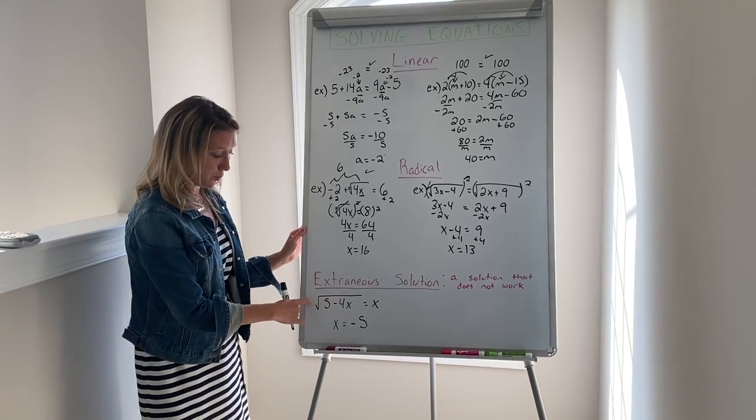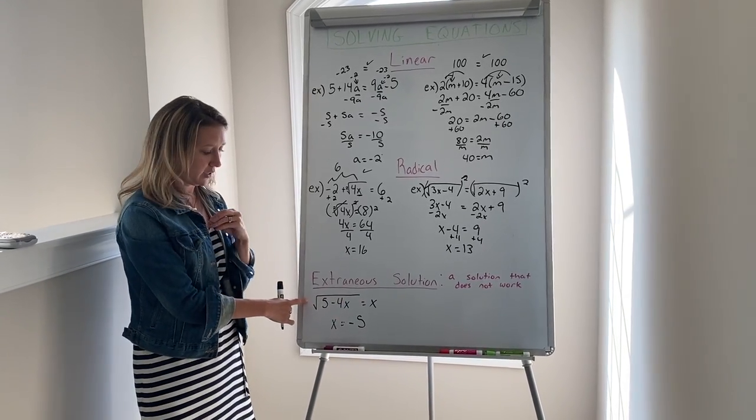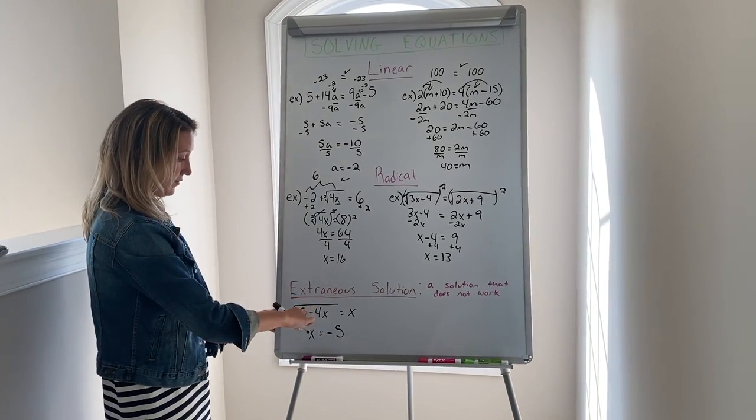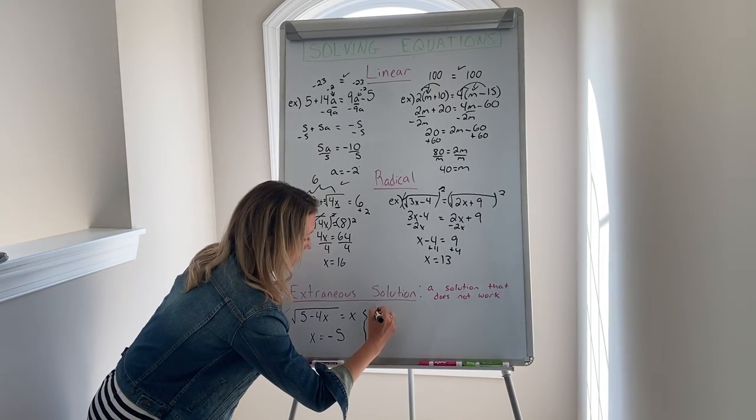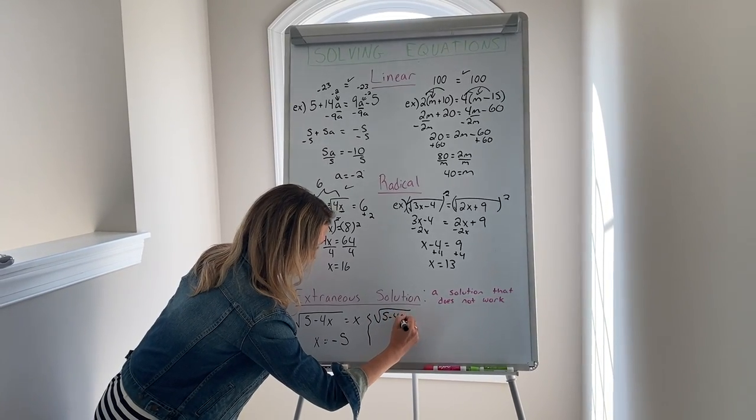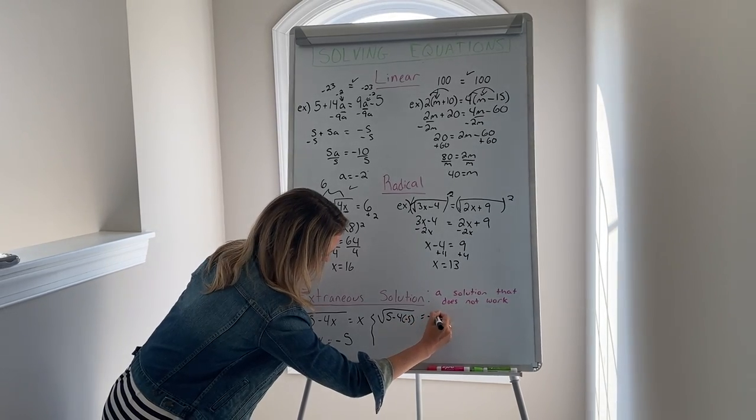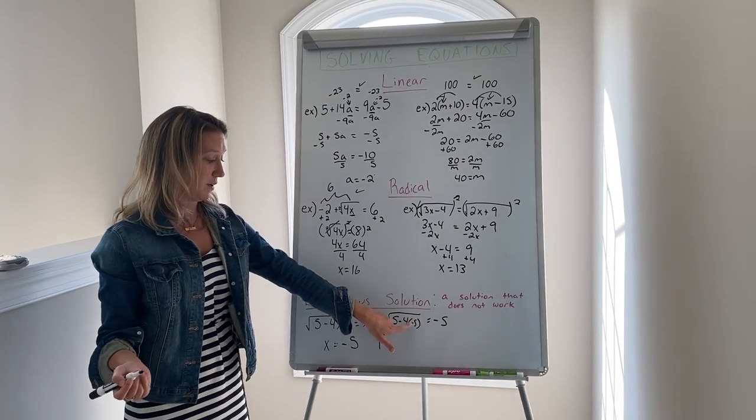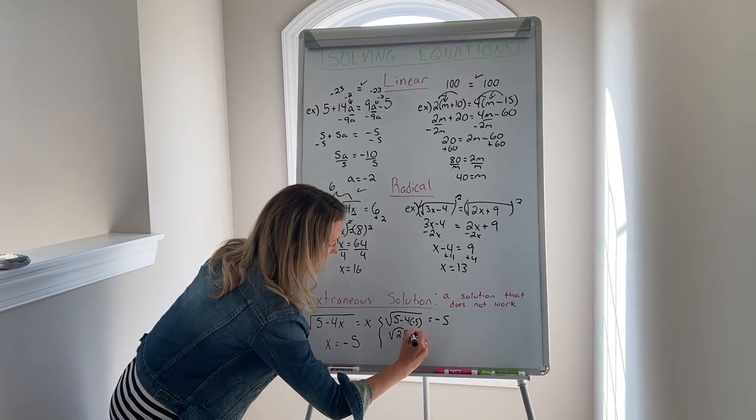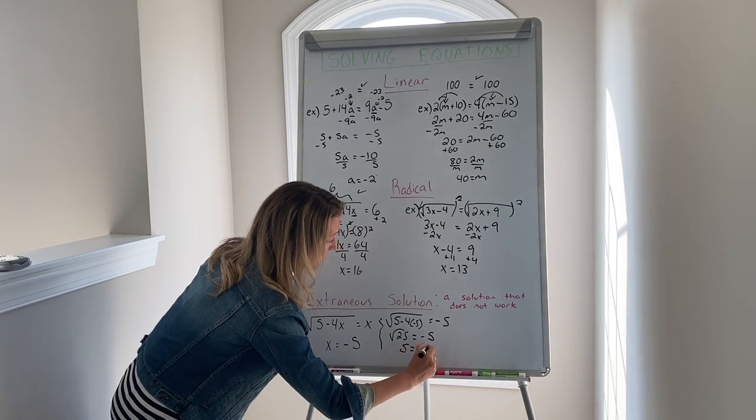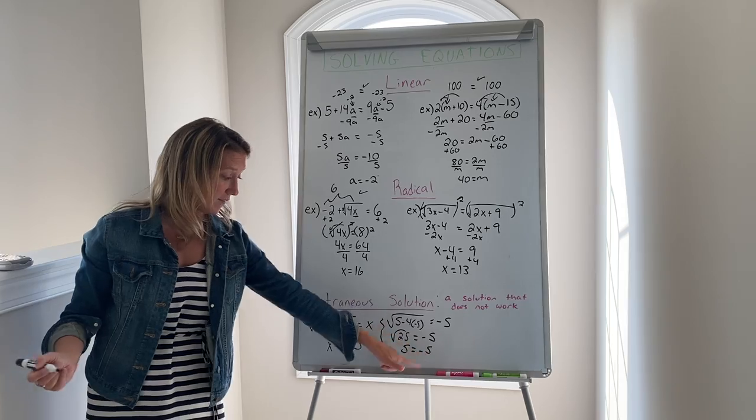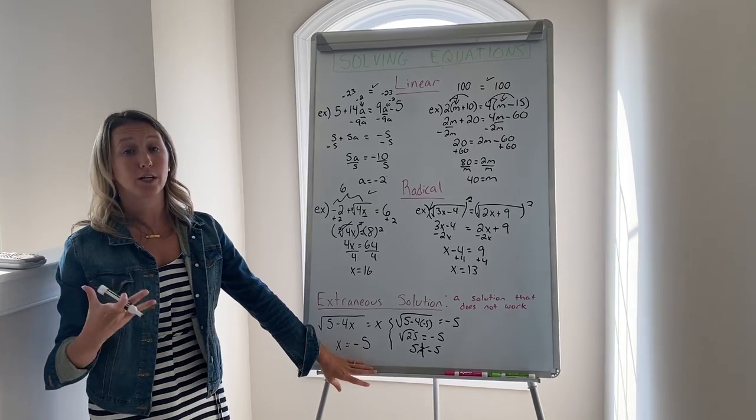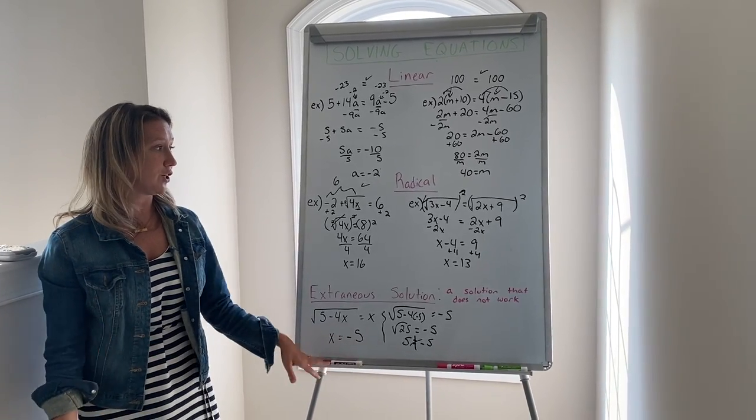For example, if this was our original problem and we solved it, we did the math correctly and we got x equals negative 5. Now we want to go back to check. We plug in negative 5 to both sides, left and right. When we check it, we would have 5 minus x equals negative 5. If we reduce this side, negative 4 times negative 5 would be 20. So 5 plus 20 would be the square root of 25, which is positive 5. Because here we have a positive 5 equals a negative 5, which is a not true statement, this means negative 5 is not the answer and would be considered an extraneous solution. So make sure you always check your answers to make sure that you're right.